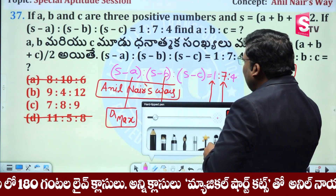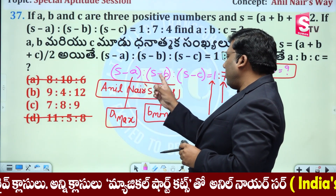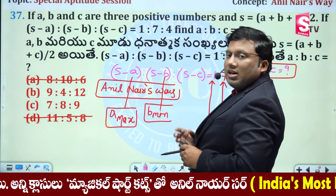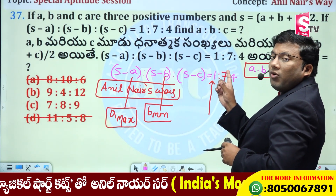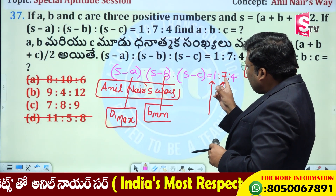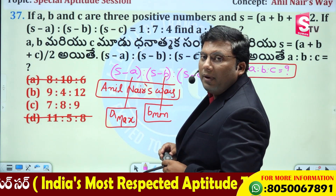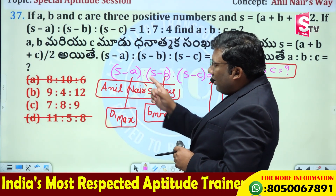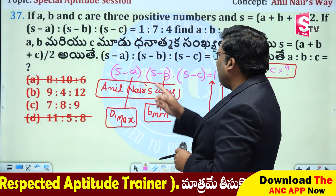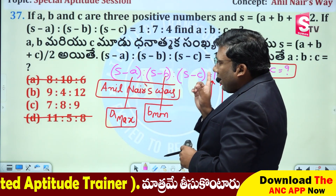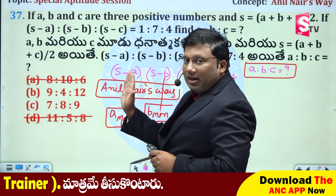We will see here one by one: S-A, S-B, S-C. S-A, S-B, S-C. The ratio is 1 : 7 : 4. Here 7 is maximum, it is S-B. So B is minimum. S-A is 1, which is minimum, so A is maximum. These two hints follow from the logic.